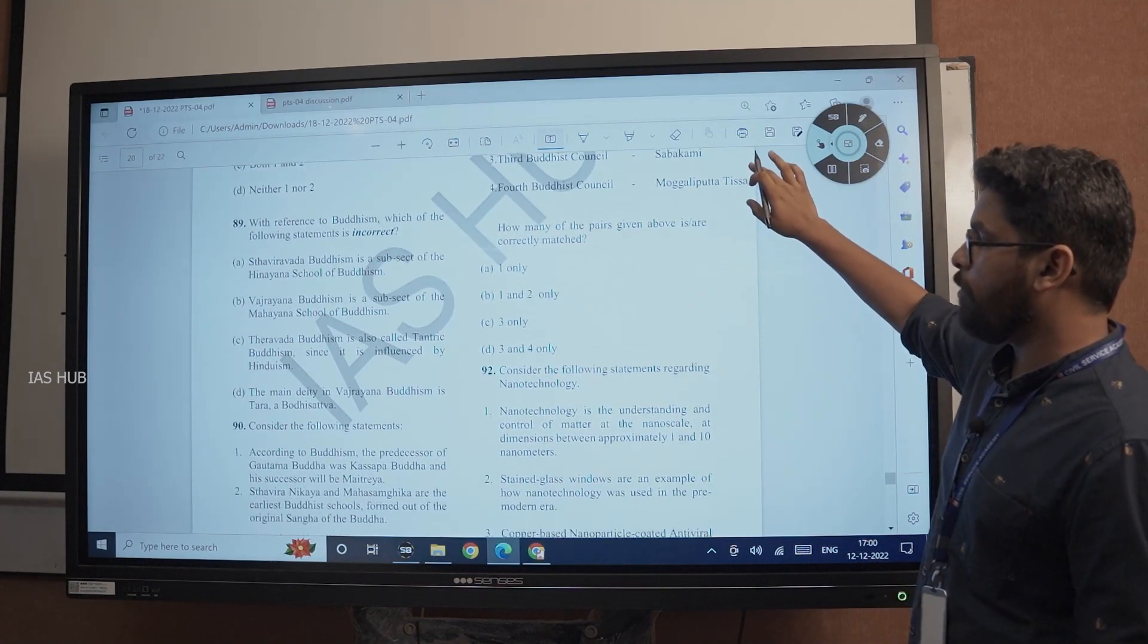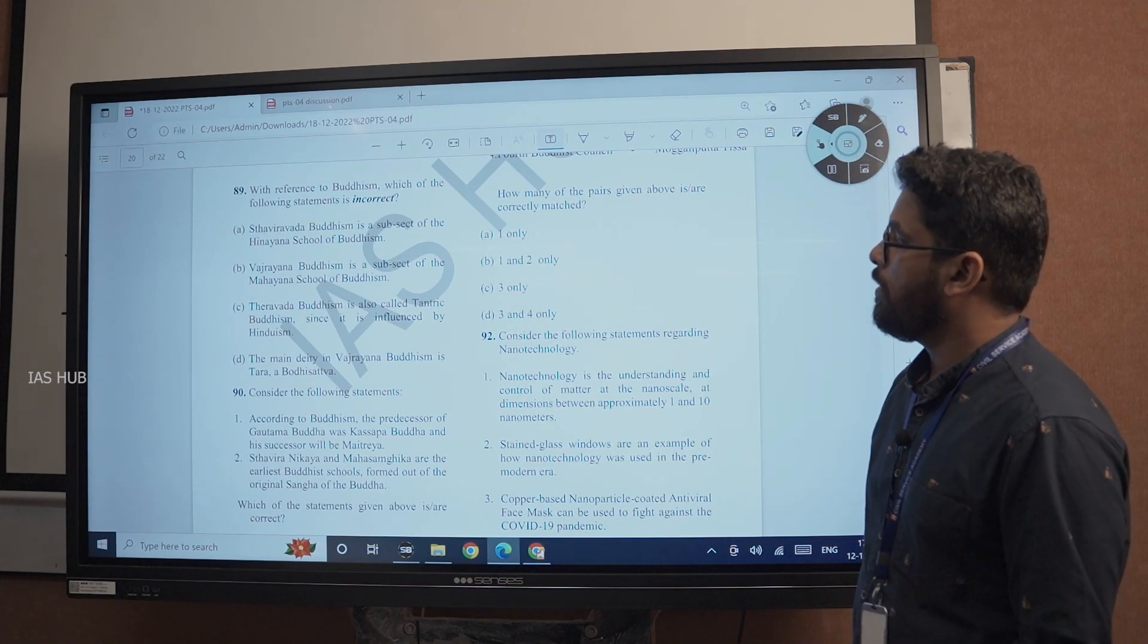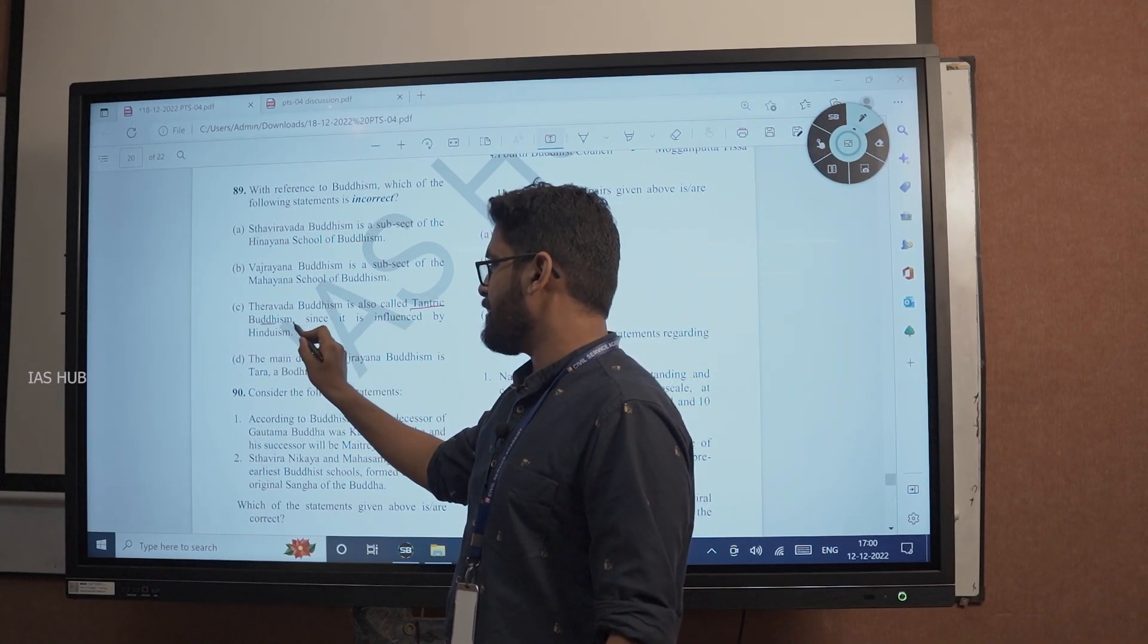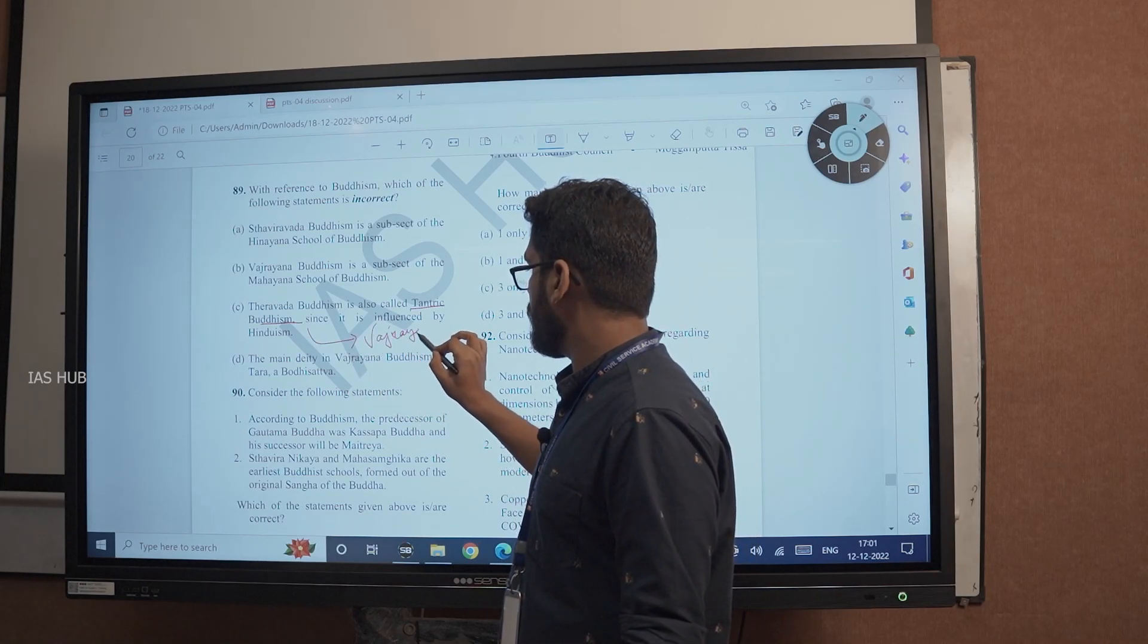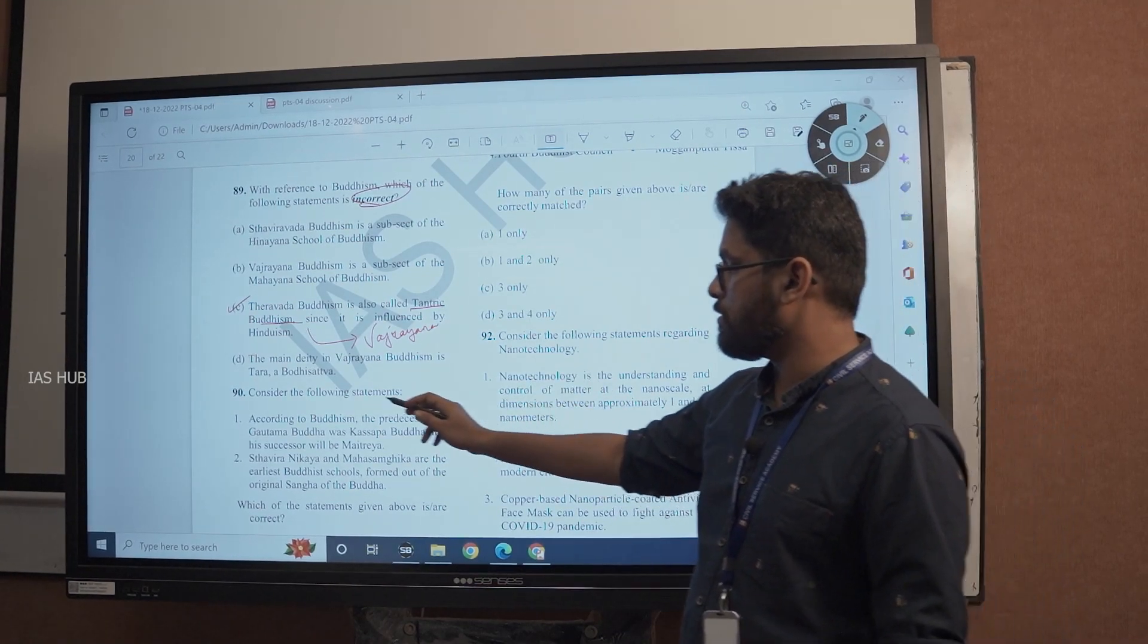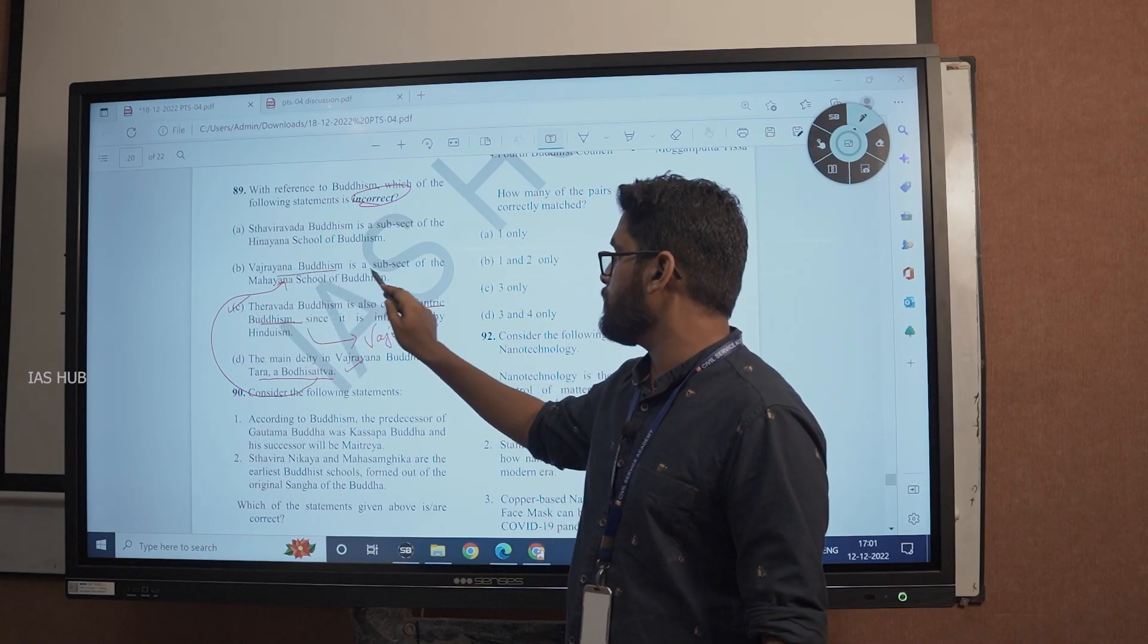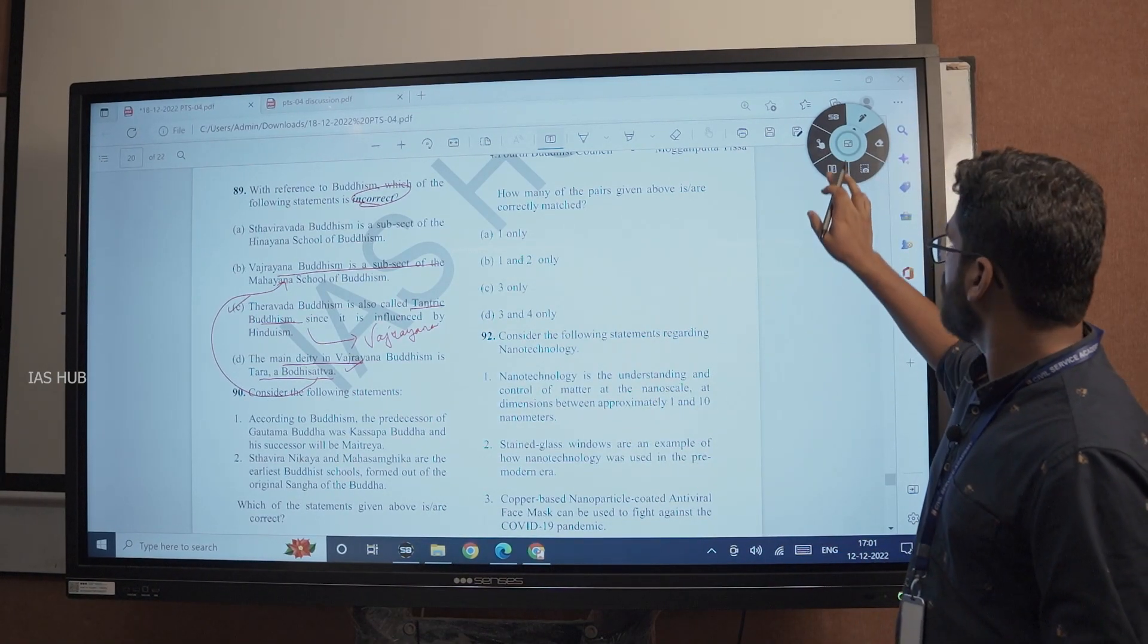With reference to Buddhism, which of the following statements is incorrect? Sthaviravada Buddhism is a subset of Hinayana school of Buddhism. Vajrayana Buddhism is a subset of Mahayana school of Buddhism. Theravada Buddhism is also called Tantrik Buddhism. Very basic fact, you should know that Tantrik Buddhism is nothing but Vajrayana. So option C is incorrect. The main deity in Vajrayana Buddhism is Tara of Bodhisattva.